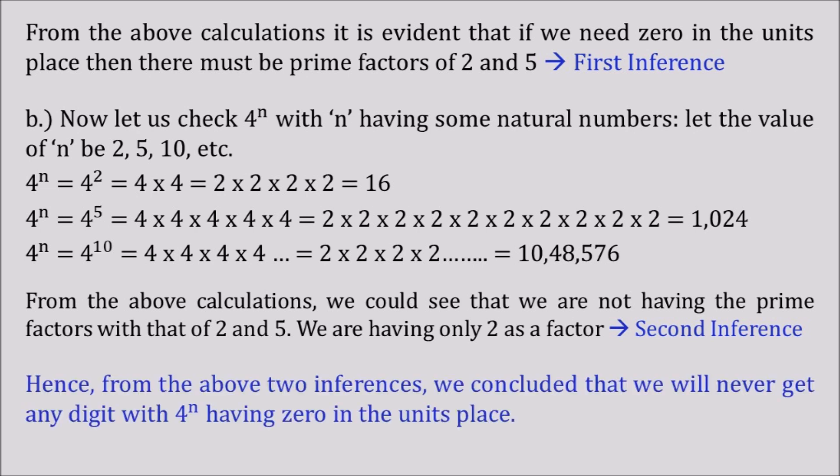Hence, from the above two inferences, we could easily conclude that it is not possible to have zero in the units place with 4^n. I believe you understood this calculation. If you have any concerns or questions, kindly reach out to me in the comment section. Thank you. If you really like my video, kindly subscribe and let your friends know. Bye.